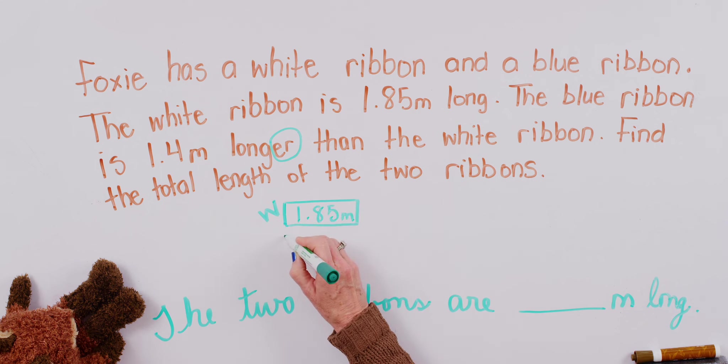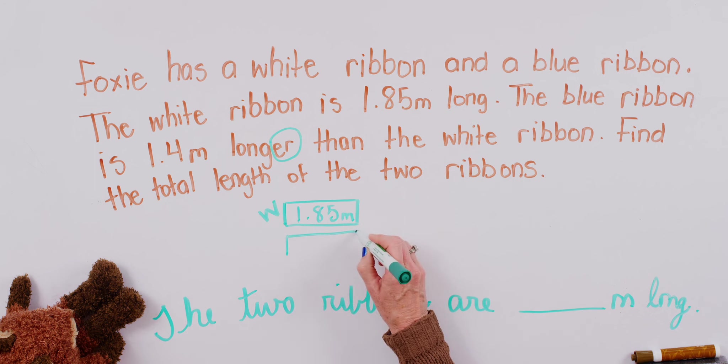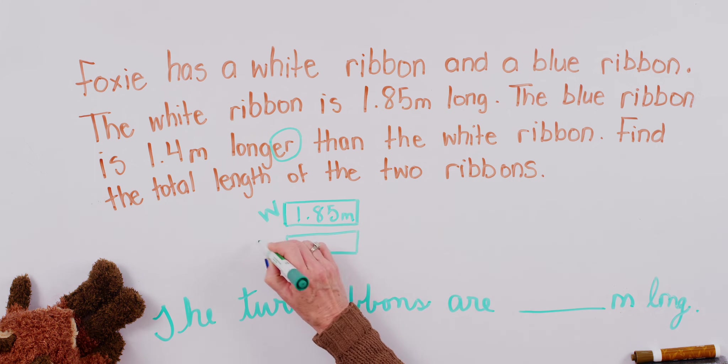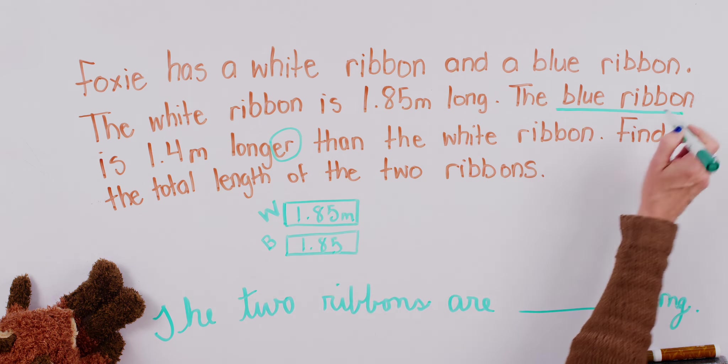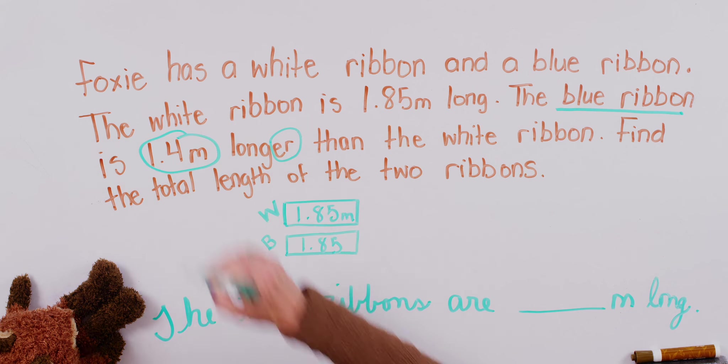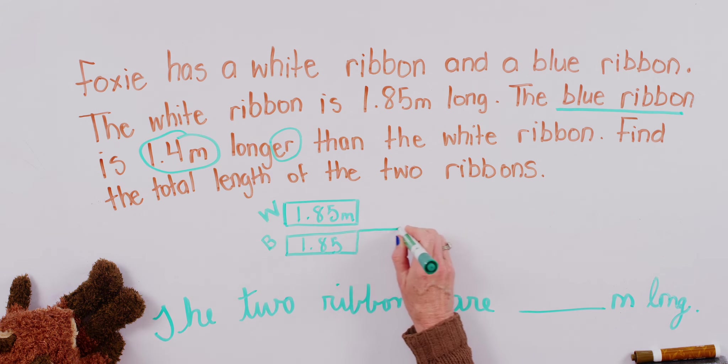And it is 1.85 meters. And so, then for the blue ribbon, we're going to start off with the same. If you want, you can write this in here. All right. But it turns out that the blue ribbon is 1.4 meters longer than the white ribbon. So let's show that. So this is 1.4.